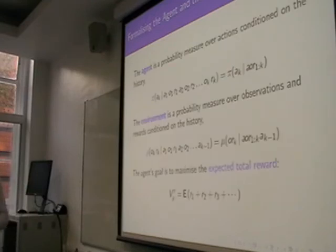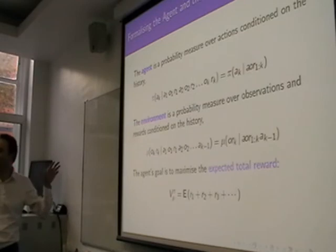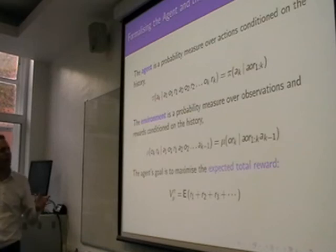So, we take an agent to be a probability measure over actions, conditioned on history. So, basically, the agent has everything that's observed so far, all the actions it's taken, all the observations, all the rewards. And then, there's some probability distribution over what its action is going to be. So, this is a very general agent. If it's deterministic, only one of these things will have a probability of 1, everything else will be 0. And this is a more compact notation here.